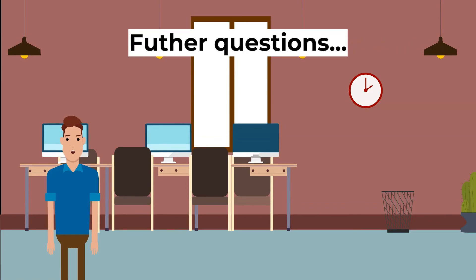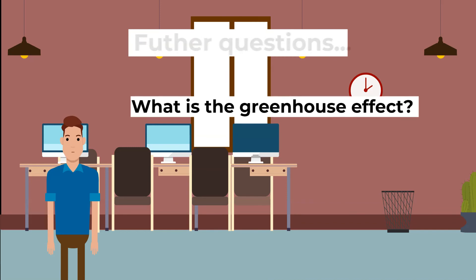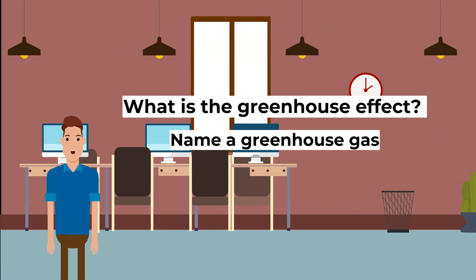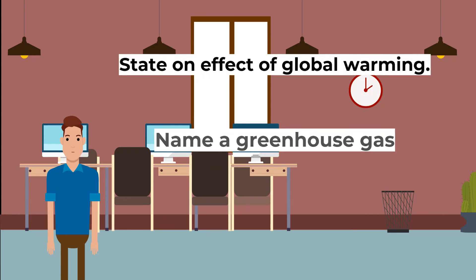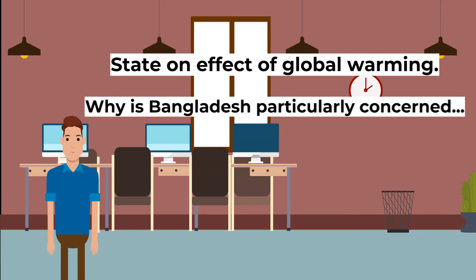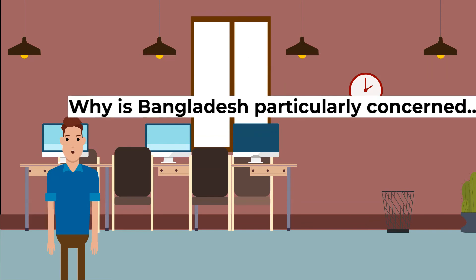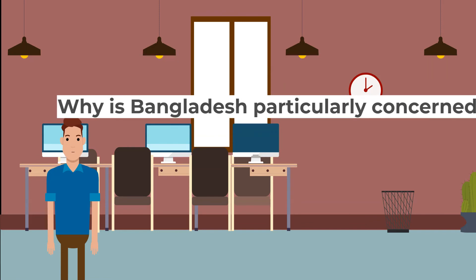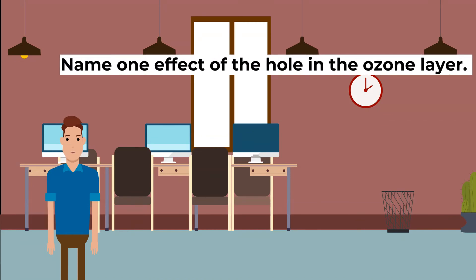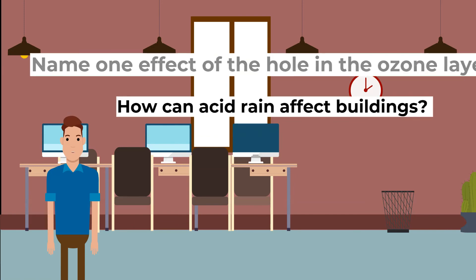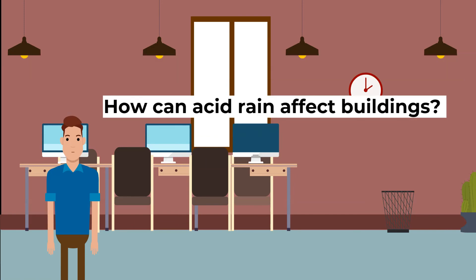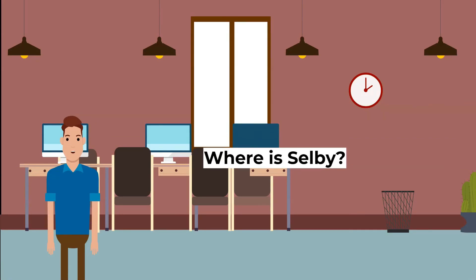Questions you can research further: What is the greenhouse effect? Name a greenhouse gas. State one effect of global warming. Why is Bangladesh particularly concerned about the effects of global warming? Name one effect of the hole in the ozone layer. How can acid rain affect buildings? Selby is the main coalfield still mining coal underground — where is Selby?